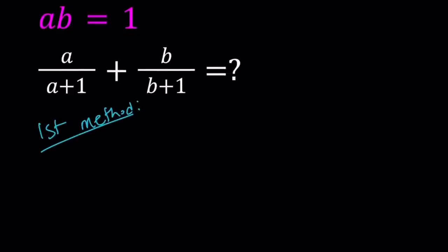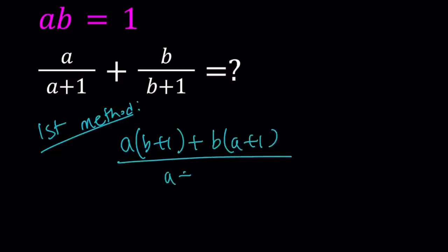So first method, I'm going to make a common denominator. Multiply a by b plus 1, and multiply b by a plus 1, and multiply the denominators. One thing to keep in mind here is if we're looking for real solutions, I mean if you want this to be defined, of course, a should not equal negative 1, b should not equal negative 1. So those are the conditions we need to have.